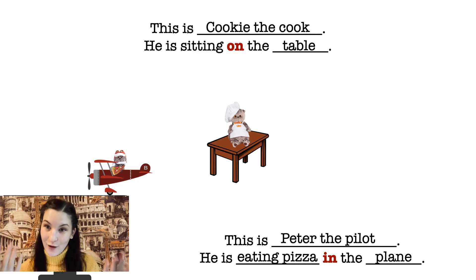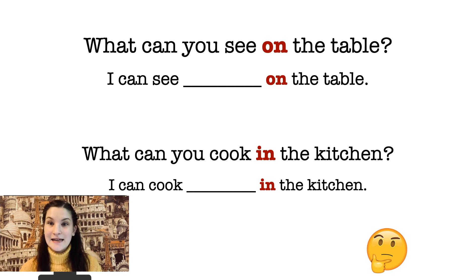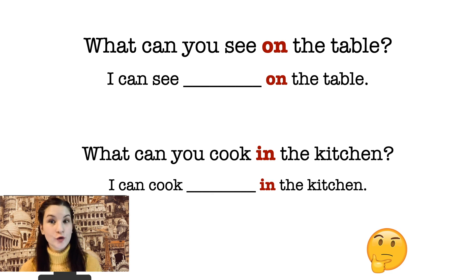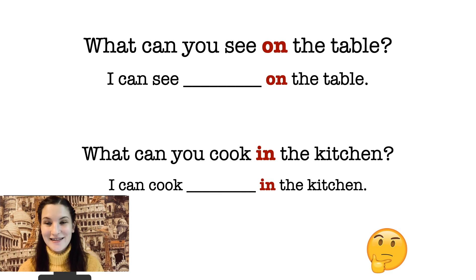Now pause the video and try to read all the sentences yourself. And I have a question for you. Look at your table — what can you see on the table? For example, if I look at my table, I can say I can see a laptop on the table and I can see a notebook on the table. What can you see on your table? Pause the video and write one sentence in your copy books. And question number two: what can you cook in the kitchen? For example, I can cook a pizza in the kitchen because I love pizza, or I can cook pasta in the kitchen. What can you cook in the kitchen? Pause the video and write one sentence in your copy books.